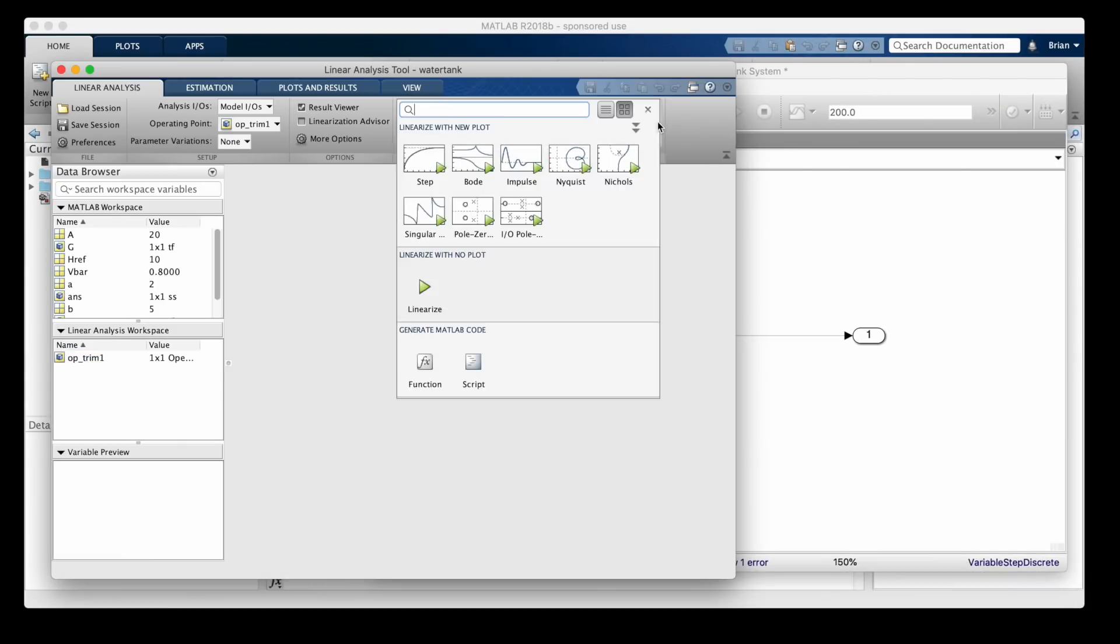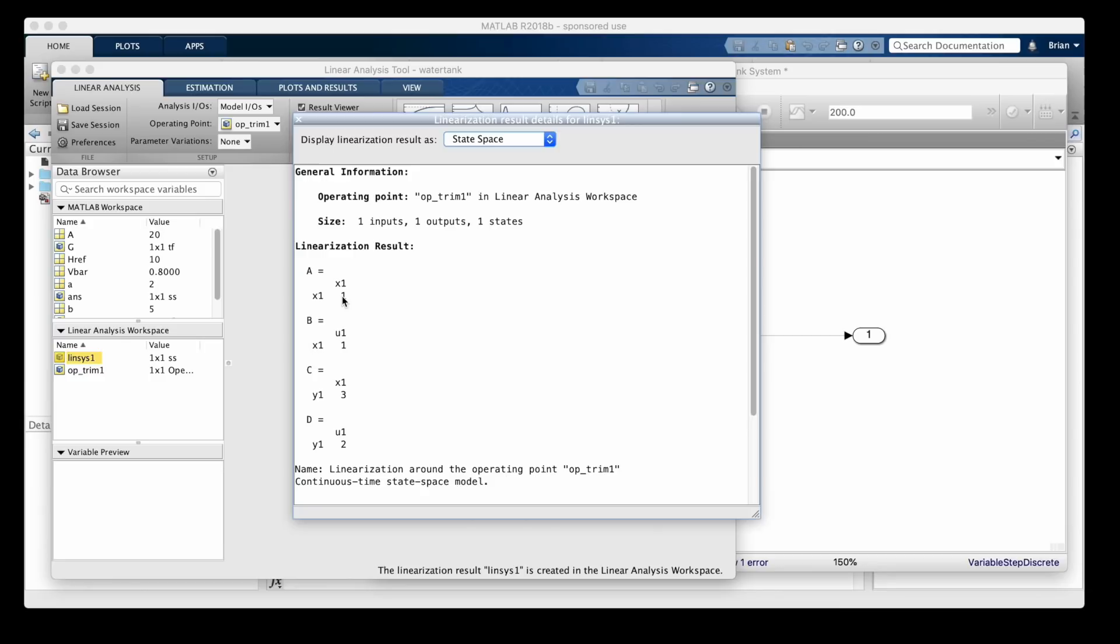It'll just use the specified linearization. And you can see that in fact it did this, even though the model I gave it behaves nothing like a square root function. So you can use this method to enforce exactly the linearization you want in cases where numerical perturbation might not produce the result you're looking for. And we're going to get to an example of that in just a bit.